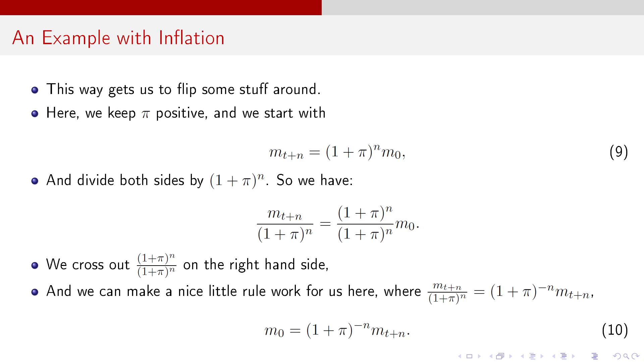This way, we actually get to flip some stuff around. So we're going to keep pi positive. We're going to start with M_{t+N} equals (1+pi)^N times M_0. And we're going to divide both sides by (1+pi)^N. So now, I have M_{t+N}/(1+pi)^N equals (1+pi)^N/(1+pi)^N times M_0. Anything divided by itself is equal to 1. So I just cross out that (1+pi)^N over (1+pi)^N on the right-hand side. And a nice little rule to work here, M_{t+N}/(1+pi)^N is the same as (1+pi)^{-N} times M_{t+N}. So M_0 is equal to (1+pi)^{-N} times M_{t+N}. And that is a good way for us to model inflation.